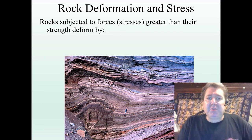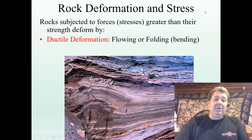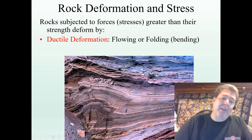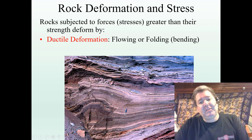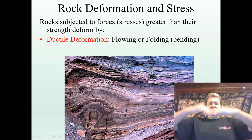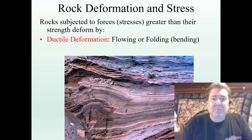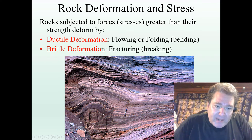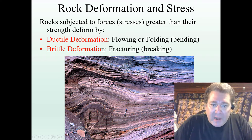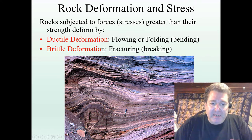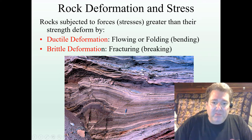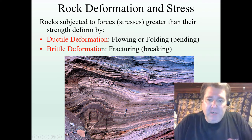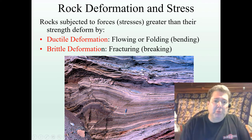There are a couple of different ways that rocks can deform. First, in what we call ductile or plastic deformation, you see this bending of rocks — flowing or folding. We also have brittle deformation — fracturing. You can see that this part and this part used to be connected, lined up, but now they've been fractured and moved apart. This line or plane of fracture is what's known as a fault — a fault line, a fault plane.